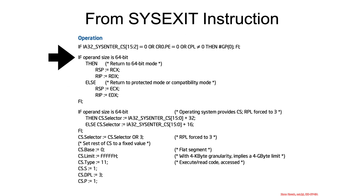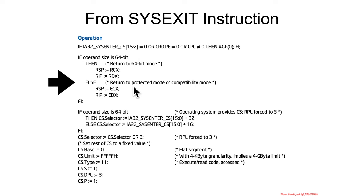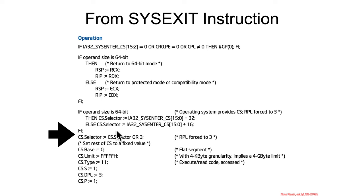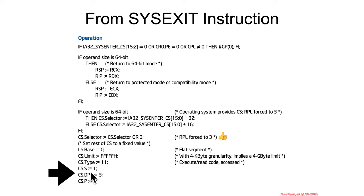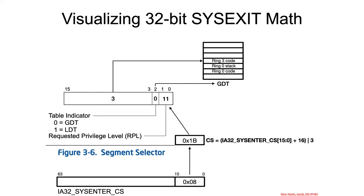Digging into the operations section of the manual for sysexit: for 32-bit, it says the CS is set to ia32_sysenter_cs plus 16, and then the CS selector is OR'd with 3. That forces you, on sysexit returning to user space, to go to ring 3. Likewise, the DPL is forced to 3, so you're back in user space — the RPL is set to 3 by that OR operation.